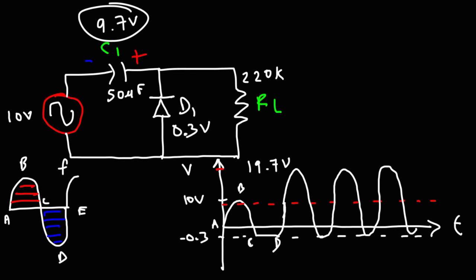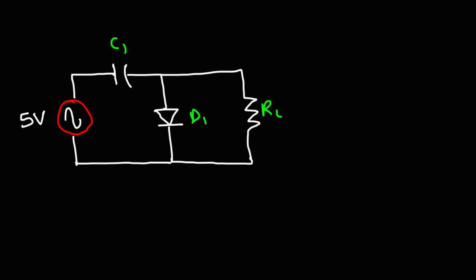This is a positive clamper circuit because the average voltage was shifted up from 0 volts to 9.7 volts — the waveform moved upward. To make a negative clamper circuit, just reverse the direction of the diode. One small correction: for the negative clamper circuit shown, you reverse the diode direction as mentioned. If you have a polarized capacitor, you also want to reverse its direction. If it's a non-polarized capacitor, you don't need to worry about that.